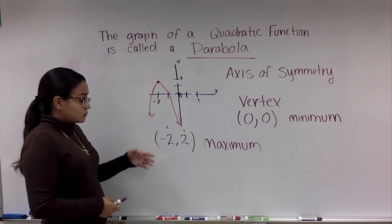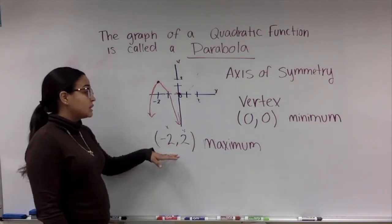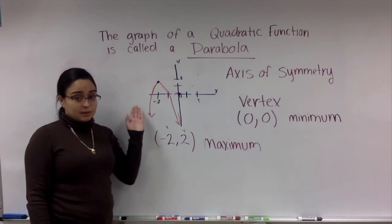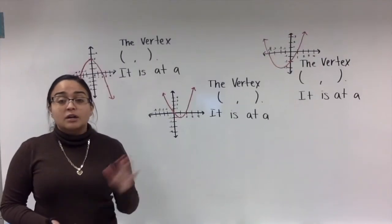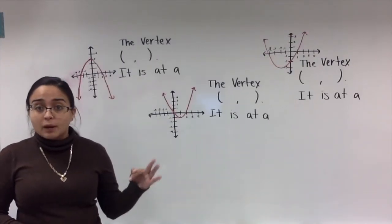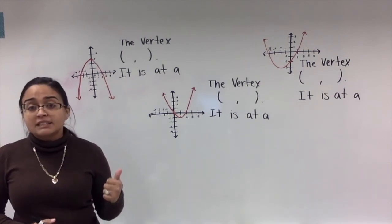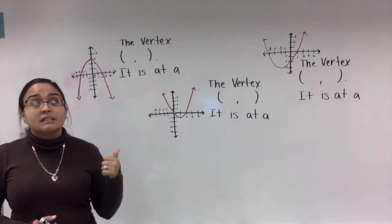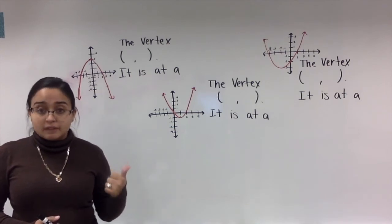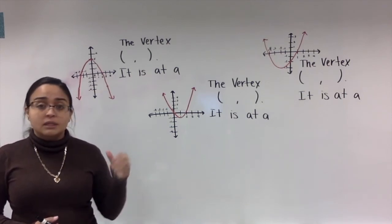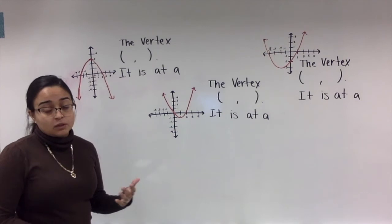So that is how we would graph our previous parabola. And this is how we would graph this parabola. Now, let's move on into your assignment. Here on the board, I have three different parabolas. What we are going to be doing is identifying the vertex as well as if it is at a minimum or at a maximum.